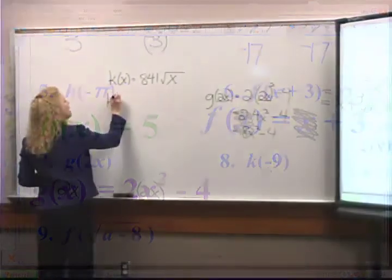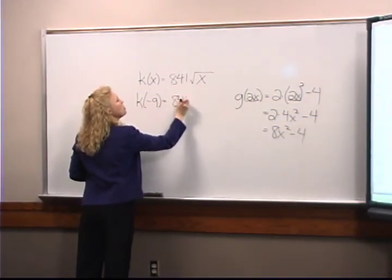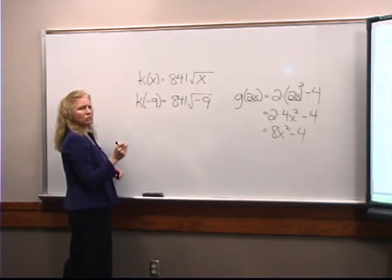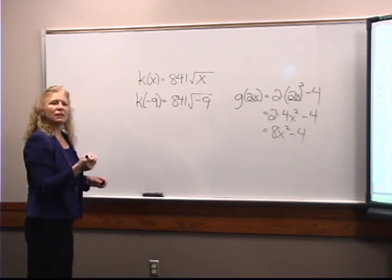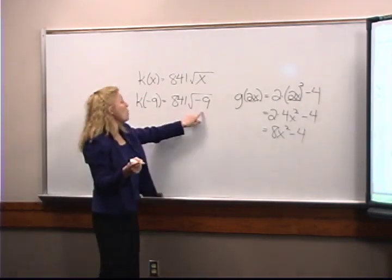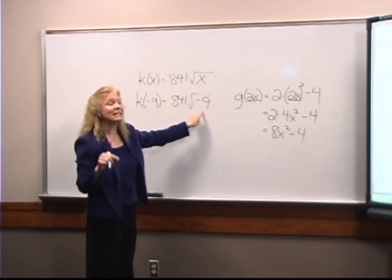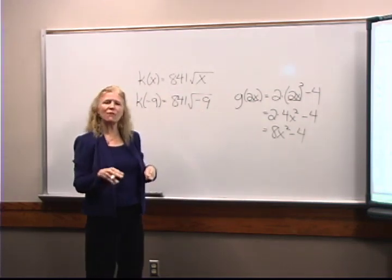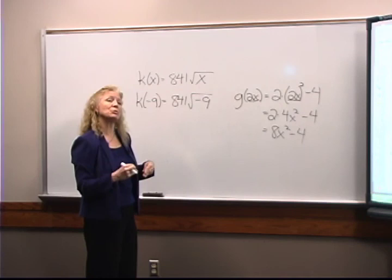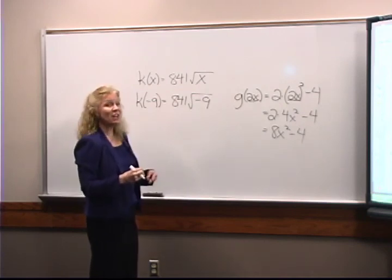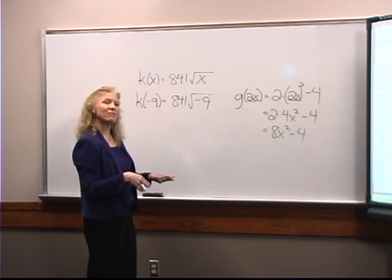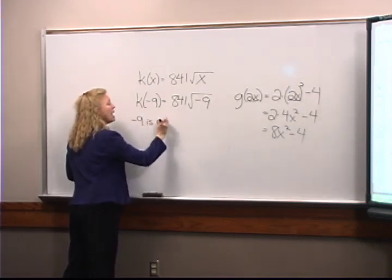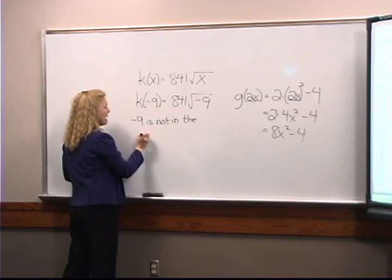The problem is that while the square root of negative 9 does exist, it's not a real number. When we're working with functions in order to graph them, we like to stay with real numbers only. So in fact, negative 9 is not in the domain of k. We mentioned that when we first looked at this function — so I can say negative 9 is not in the domain of k.